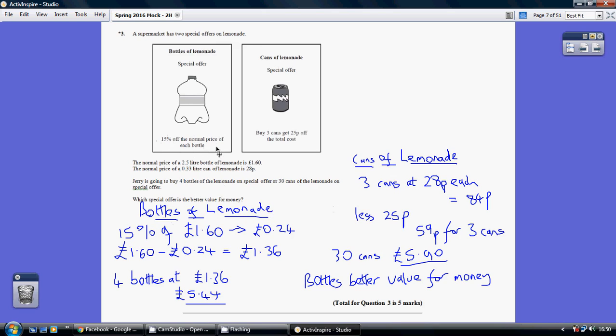that we get 15% off the normal price of each bottle. The starting point is to work out what 15% off is. The price of a bottle of lemonade is £1.60, so 15% of £1.60 is 0.15 times £1.60, which is 24p.